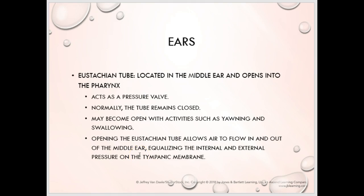The Eustachian tube — also known as the auditory or pharyngotympanic tube — acts as a pressure valve. The middle ear is a closed environment, so this tube allows pressure equalization between the middle ear and the nasopharynx. The tube is normally closed, but yawning or swallowing opens it, allowing the middle ear to pressurize with the external environment. That's why yawning when flying helps equalize that pressure.